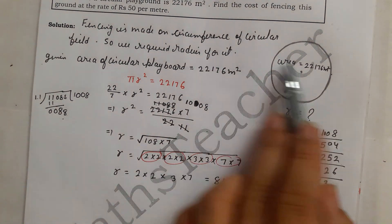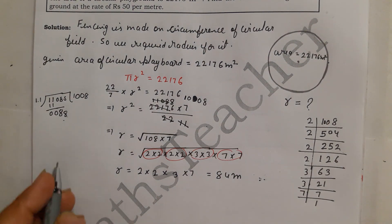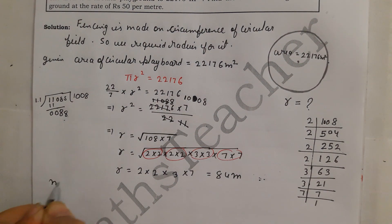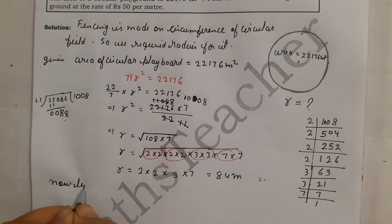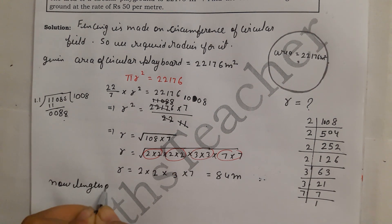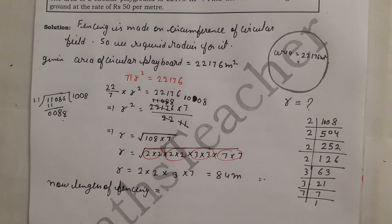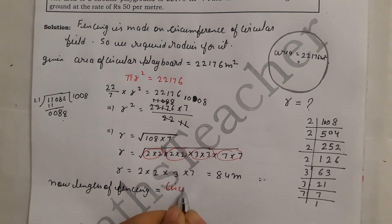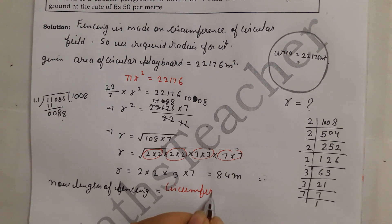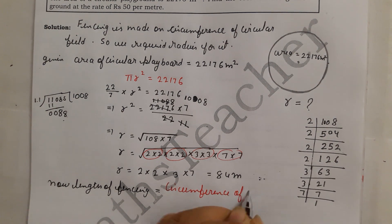Now we find circumference because we have to do fencing. So circumference, or length of fencing, equals circumference of circle.